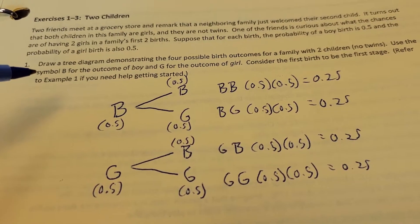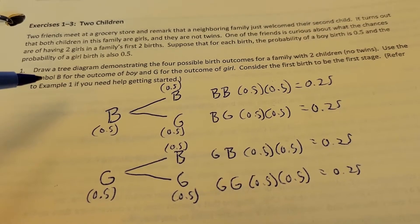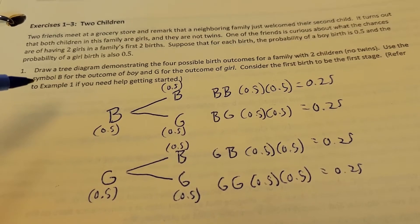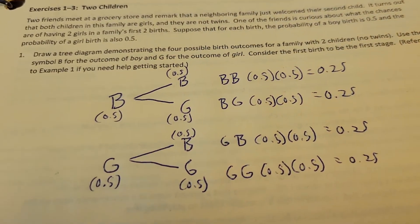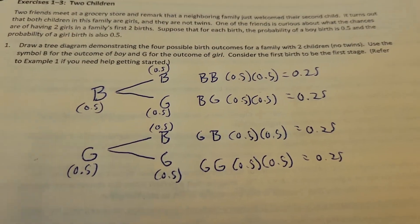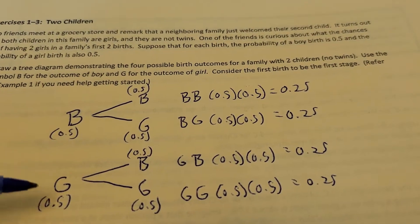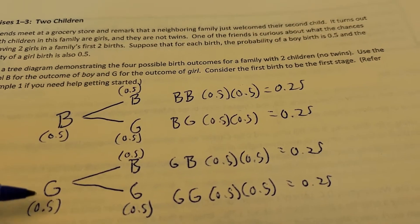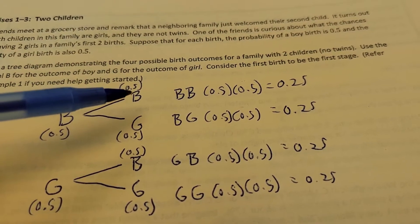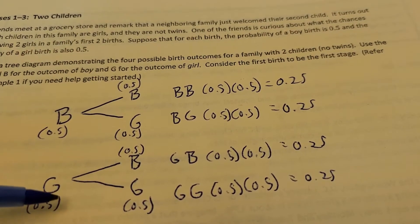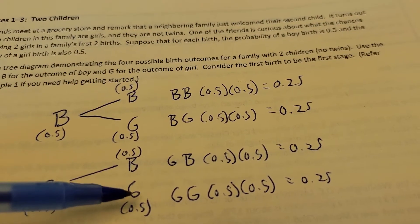One, draw a tree diagram demonstrating the four possible birth outcomes for a family of two children with no twins. Use the symbol B for boy, G for girl, and the first birth is the first stage. So first kid, you could have a boy or a girl. You have a 50-50 chance of that happening. And we're going to the second kid. Well, if you had a boy first, you could have a boy or a girl. If you had a girl first, you could have a boy or a girl in the second kid also.